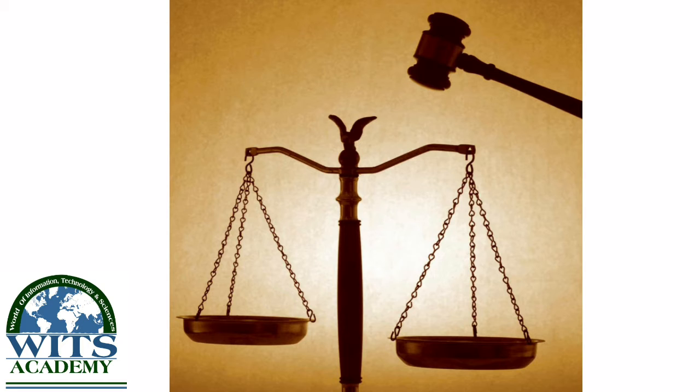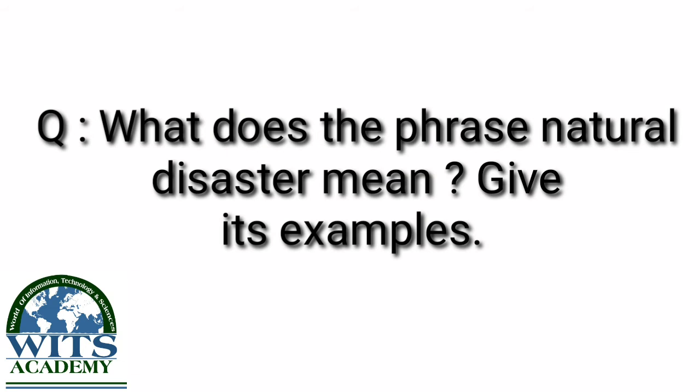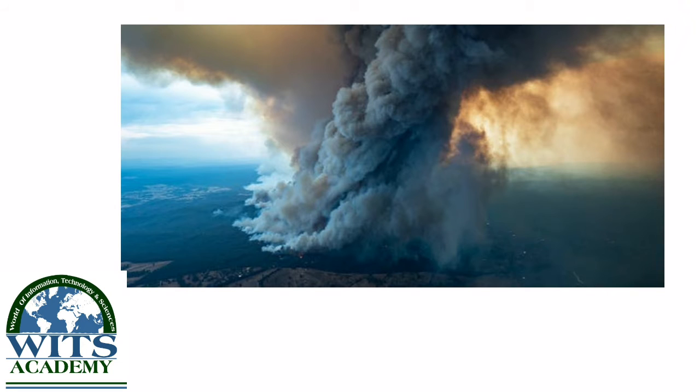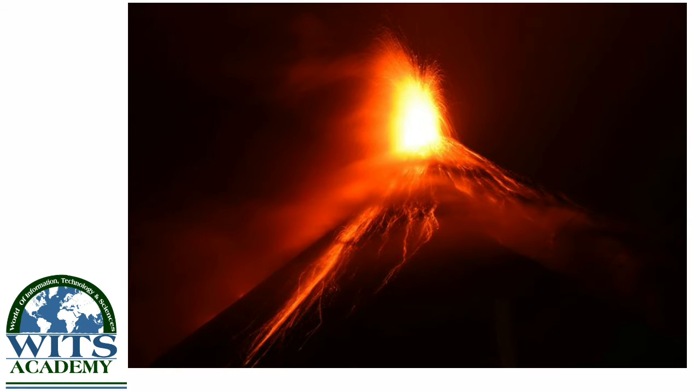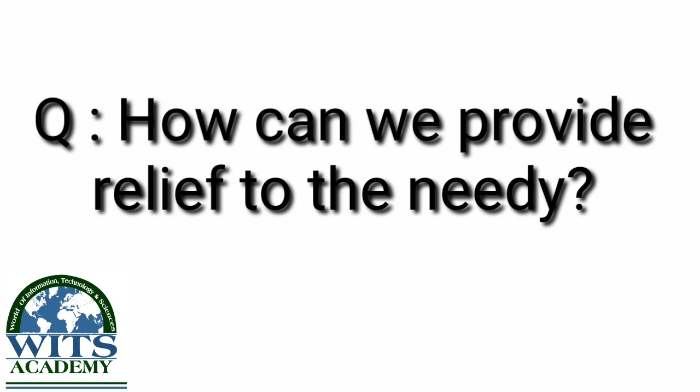The next question is: what does the phrase 'natural disaster' mean? Give its examples. The answer is: the phrase natural disaster means a sudden and terrible event in nature that usually results in serious damage, widespread destruction, and many deaths. Its examples are hurricane, tornado, earthquake, flood, tsunami, and volcanic eruptions.